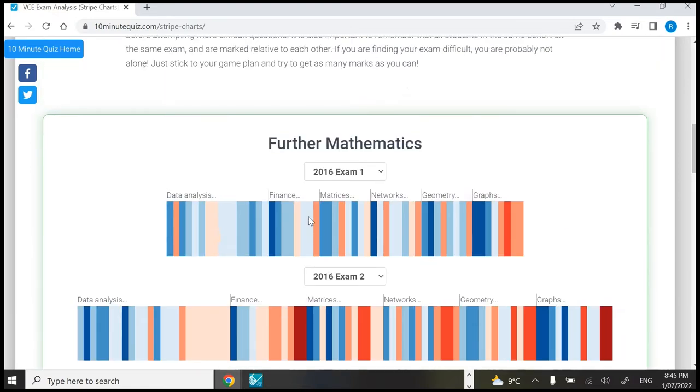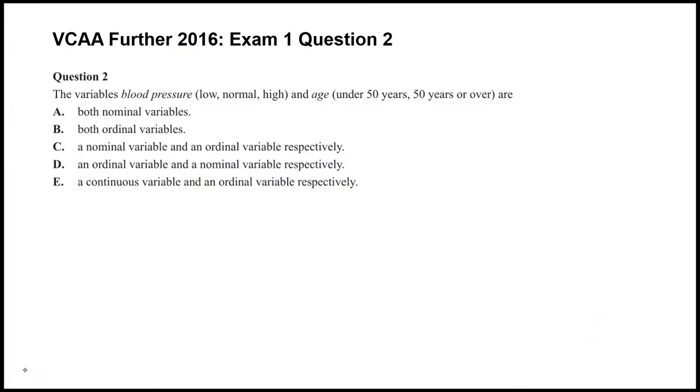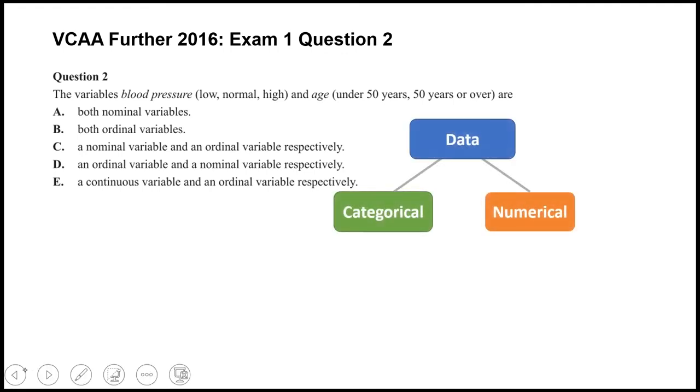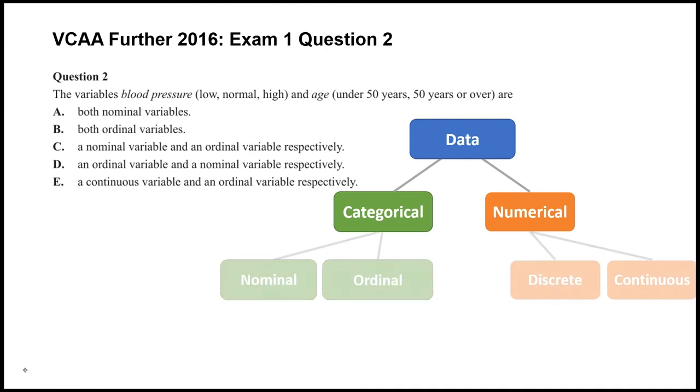2016 exam 1 question 2: The variables blood pressure (low, normal, high) and age (under 50 or 50 and over) are what type of data? As a reminder, all data can be either categorical or numerical. Within categorical we have nominal and ordinal, and within numerical we have discrete and continuous.